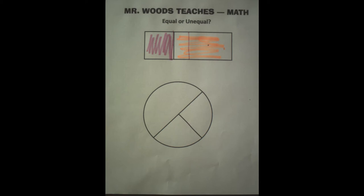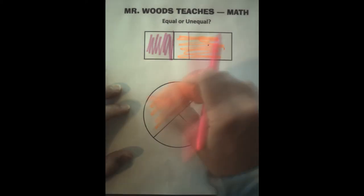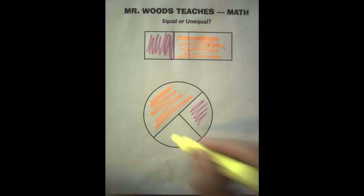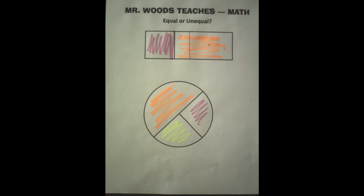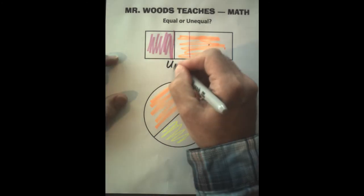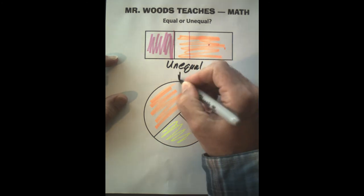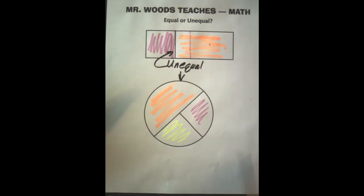Let's look at the circle here. Is it in thirds? No, because we have this large piece, this small piece, and this small piece. And if you recall from earlier, this is unequal. Here and here. They're both unequal pieces.